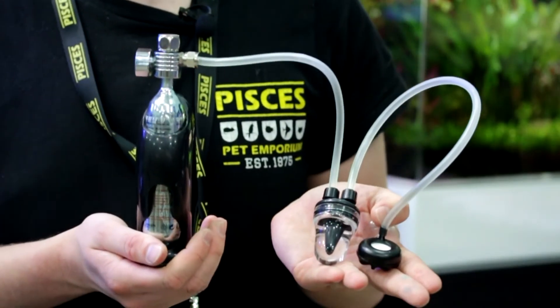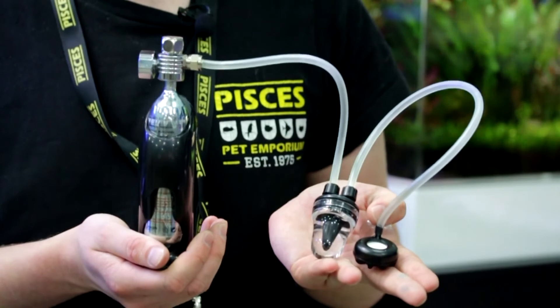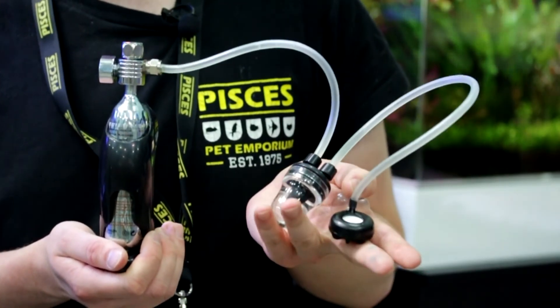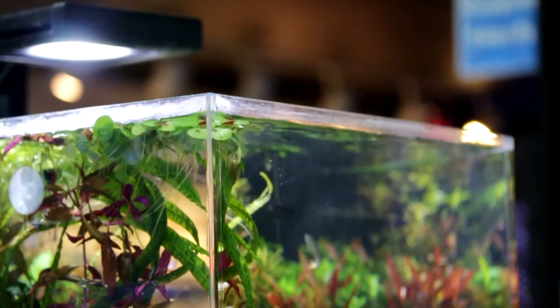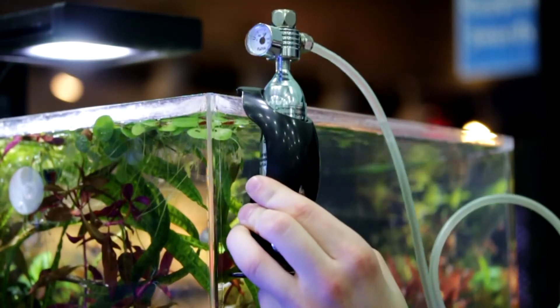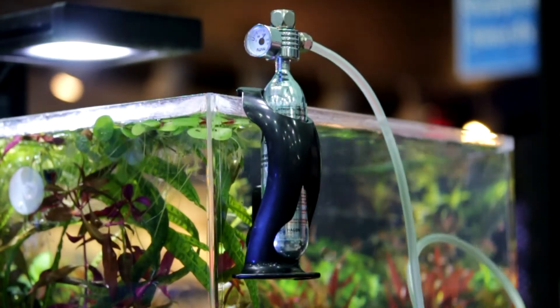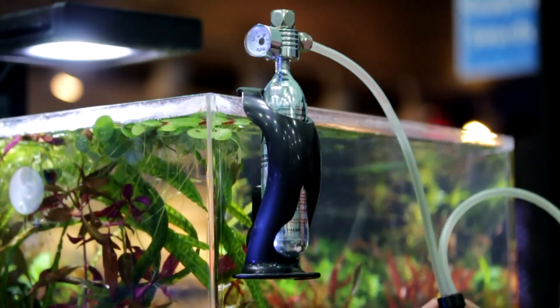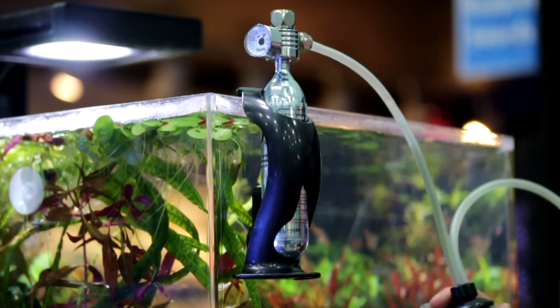Here we have the completed CO2 system set up: the regulator leading into the bubble counter leading into the diffuser. Now hang the regulator onto the side of the tank. As I said earlier, this can be used in two different ways. It can either be used on a flat surface, or if you have a rimless tank, you can hang it off the side.